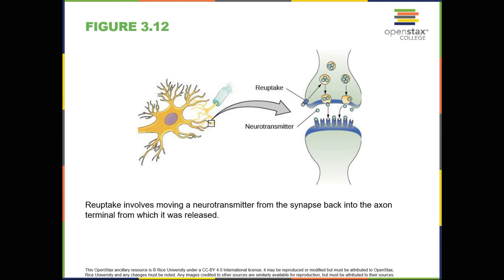In contrast to agonists and antagonists, which both operate by binding to receptor sites, reuptake inhibitors prevent unused neurotransmitters from being transported back to the neuron. This leaves more neurotransmitters in the synapse for a longer time, increasing its effects. Depression, which has been consistently linked with reduced serotonin levels, is commonly treated with selective serotonin reuptake inhibitors, or SSRIs. By preventing reuptake, SSRIs strengthen the effect of serotonin, giving it more time to interact with serotonin receptors on dendrites. Common SSRIs on the market today include Prozac, Paxil, and Zoloft.